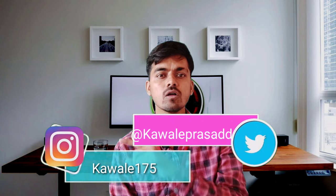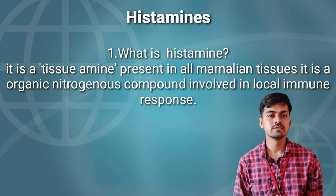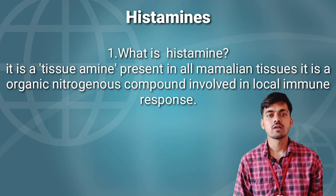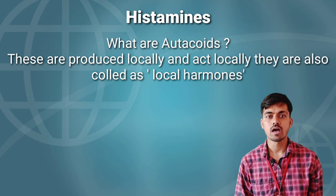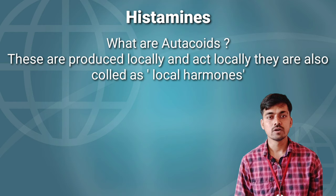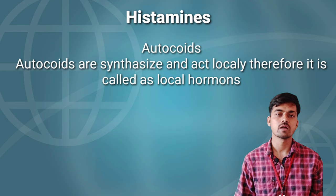Histamines are biogenic amines, or organic nitrogenous compounds, which are released as an autoimmune response. Histamines are one type of autacoid. Autacoids are local hormones — they are synthesized locally and act locally. Therefore, they are also called autacoids or local hormones.